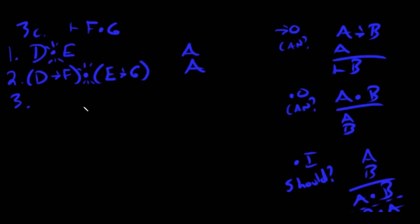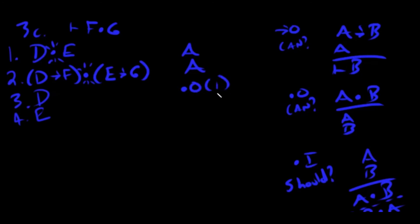Which dot do I do first? In formal logic, the order doesn't matter as long as you can. I like to do things in the order they appear. Let's start with line one: breaking 'd dot e' apart gives us 'd' and 'e' — both and-out on line one. Every time you do a move, go back to the top.